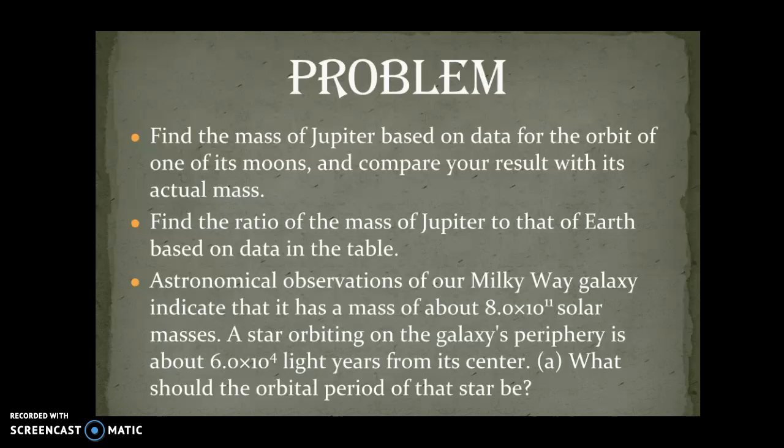Third part: astronomical observations of our Milky Way galaxy indicate that it has a mass of about 8.0 times 10 to the 11th solar masses. A star orbiting on the galaxy's periphery is about 6.0 times 10 to the 4th light years from its center, and the question is what should the orbital period of that star be?